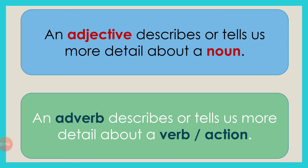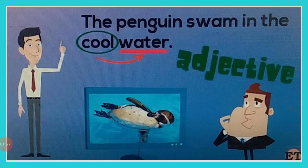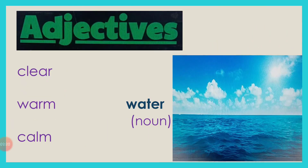Look at this example. Read the sentence: The penguin swam in the cool water. Cool is an adjective because it is describing the noun, water. Adjectives describe nouns. Now let's see what other adjectives we can use to describe water. You can say clear water, warm water, calm water or blue water. Just remember that adjectives always describe nouns.